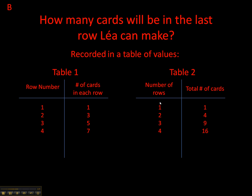We have two columns here. The number of rows column has the same pattern rule: start at 1 and add 1 each time. The total number of cards column is a little more tricky. It starts at 1, then goes to 4 — that's adding 3. Then 4 to 9 — that's adding 5. Then 9 to 16 — that's adding 7. So the amounts being added are 3, 5, 7 — each time you add 2 more. Start at 1, and then add 2 more to the increment each time.